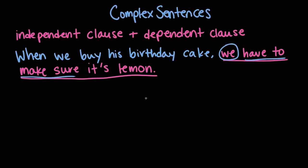We can't just say 'when we buy his birthday cake' as a sentence — that doesn't really stand on its own. It doesn't convey the information that a sentence needs to convey. So we could have an independent clause that's just 'we buy his birthday cake.' You could maybe say 'we are buying his birthday cake.' It has a subject, 'we,' and a verb, 'buy,' and it expresses a complete idea. But we add this thing called a subordinating conjunction — that's this word 'when' here. And that makes this into a dependent clause. It can't be a sentence by itself, so it depends on the later clause, 'we have to make sure it's lemon,' to be part of a sentence.